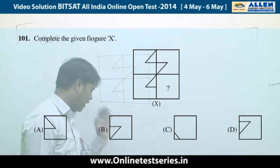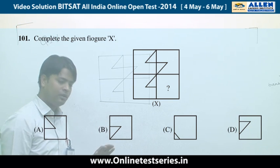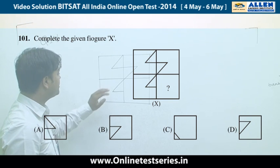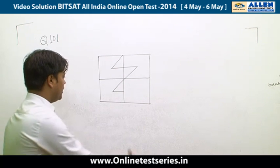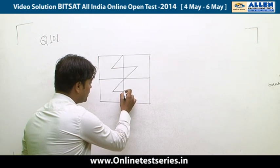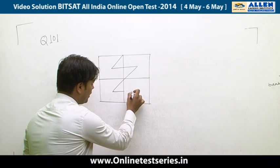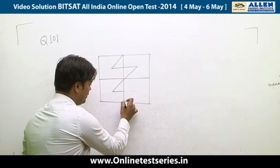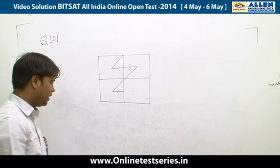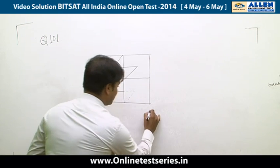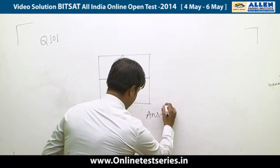Question 101 is from figure completion. Considering the figure, we raise a line to one level and then to another level, which completes the figure. The right answer is B.